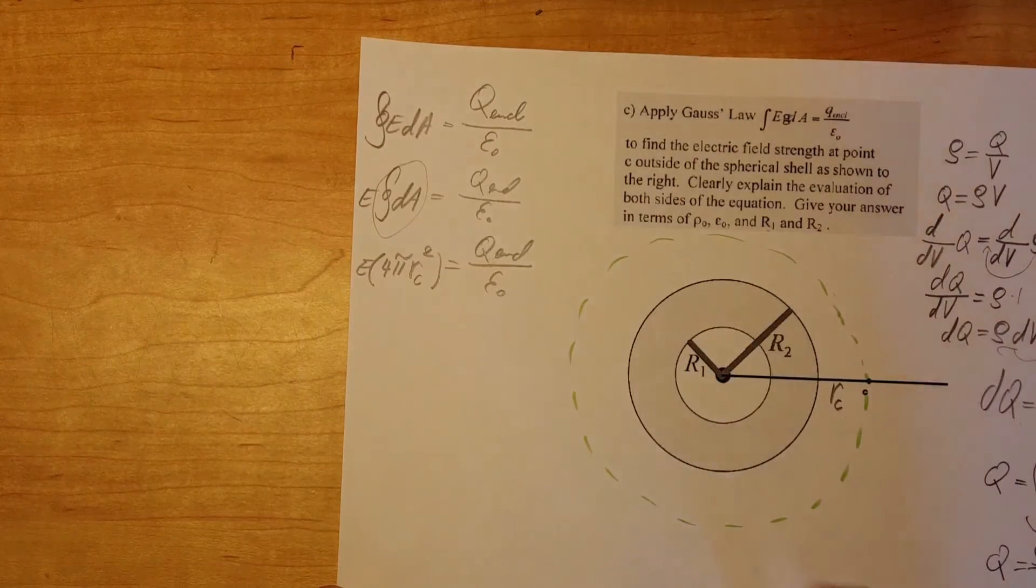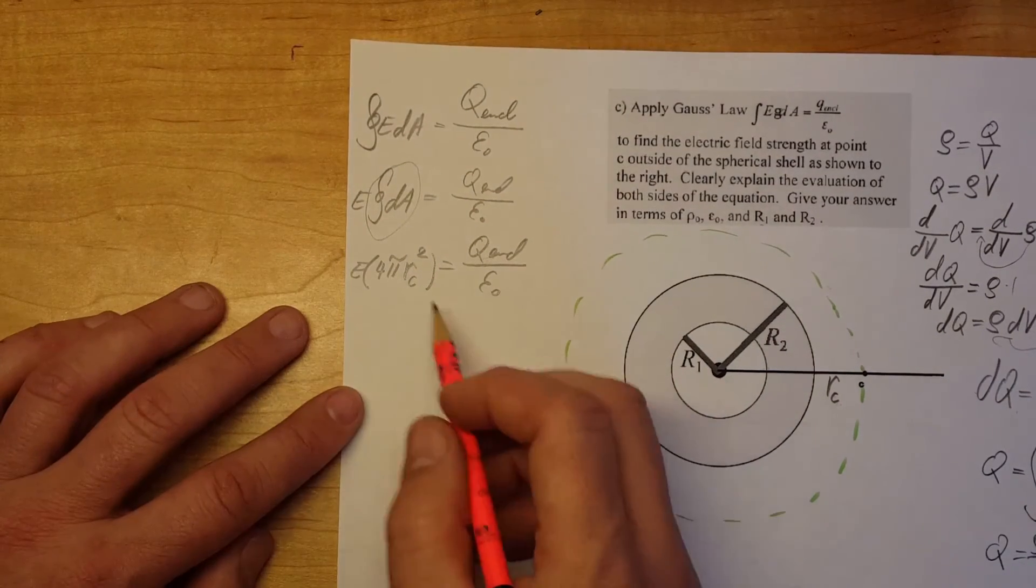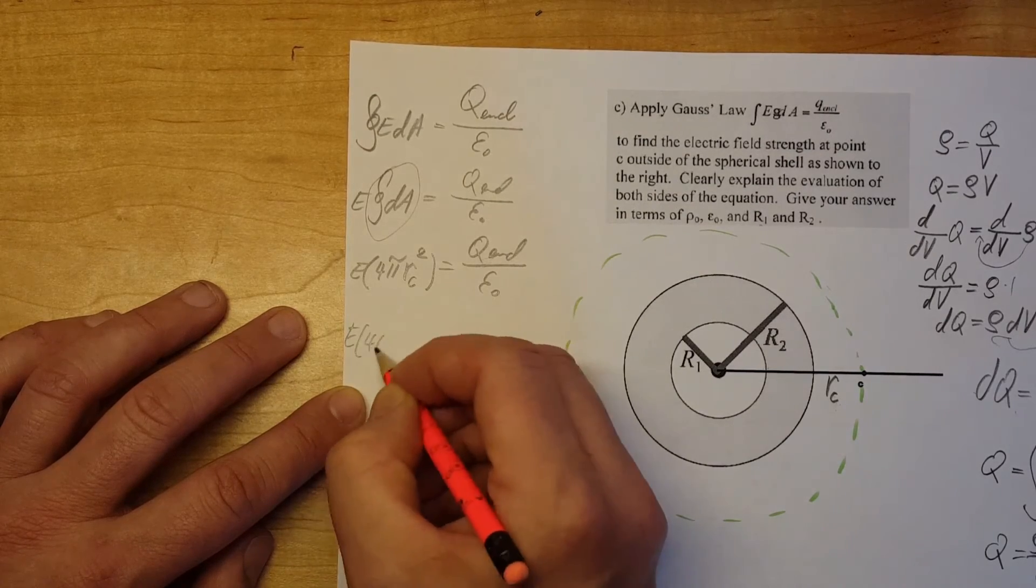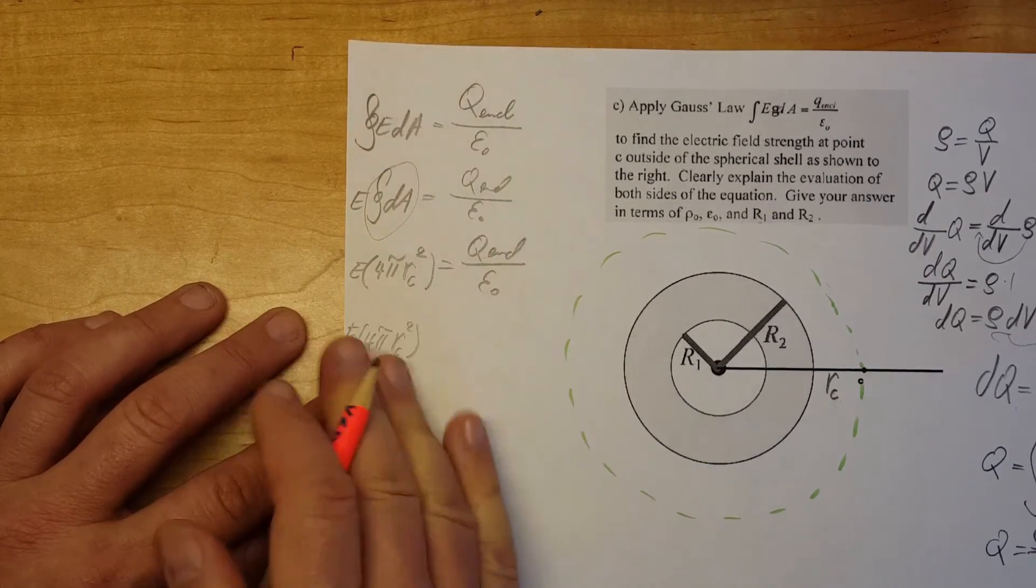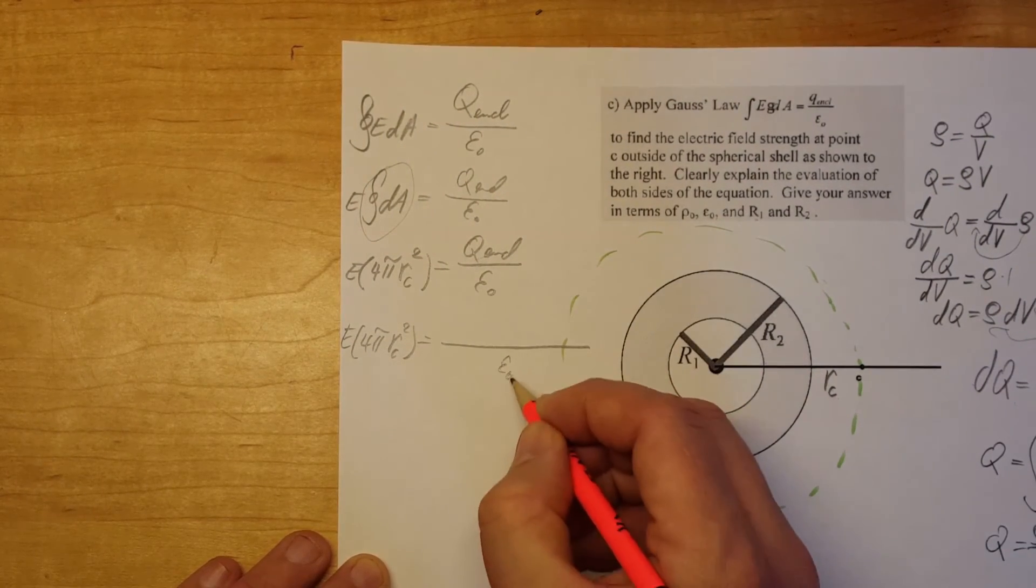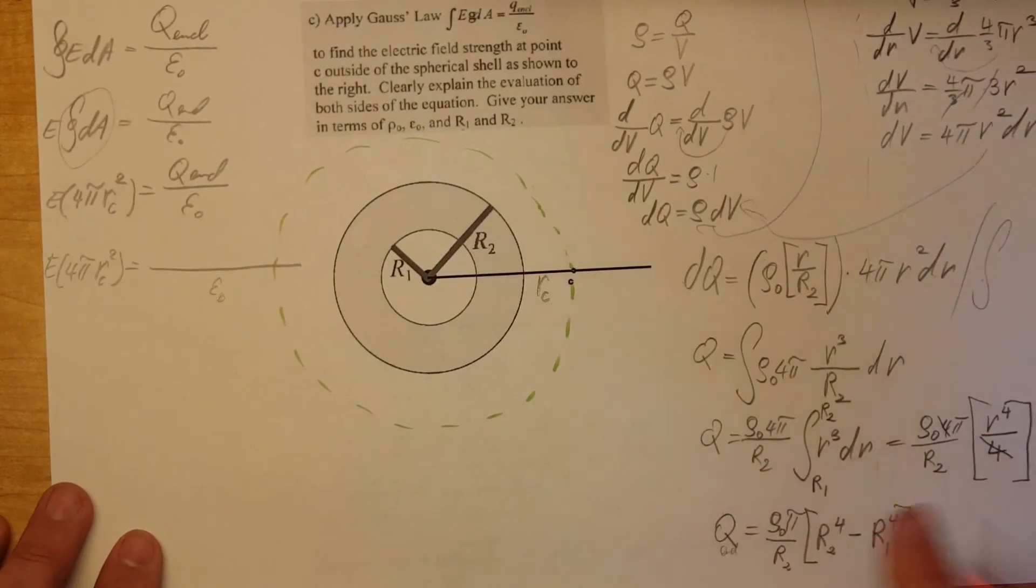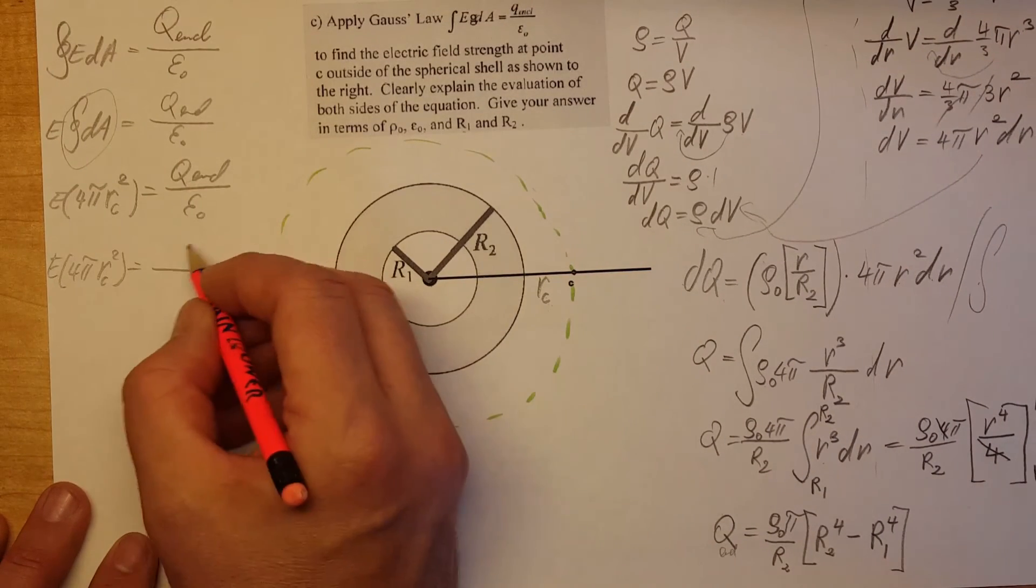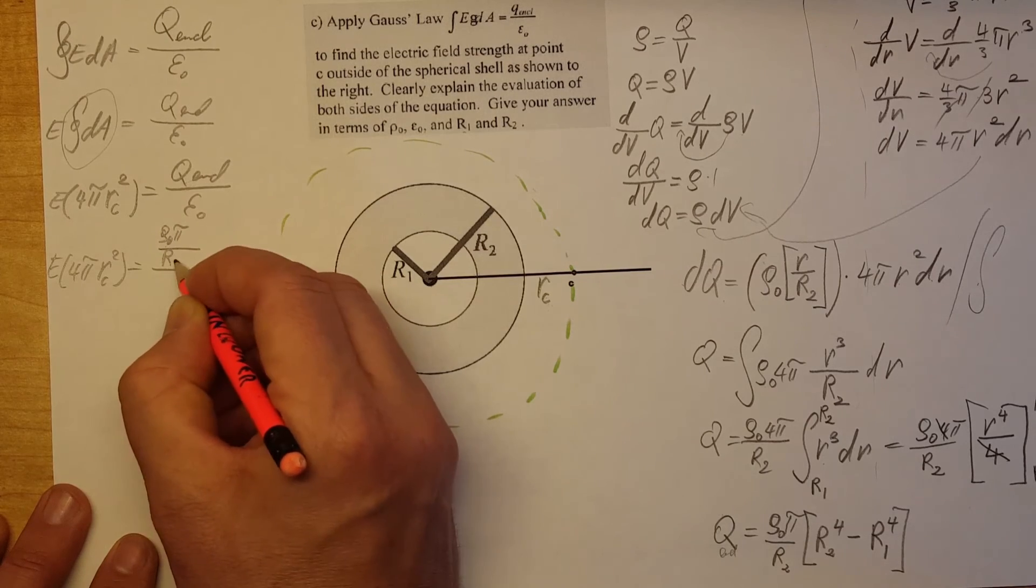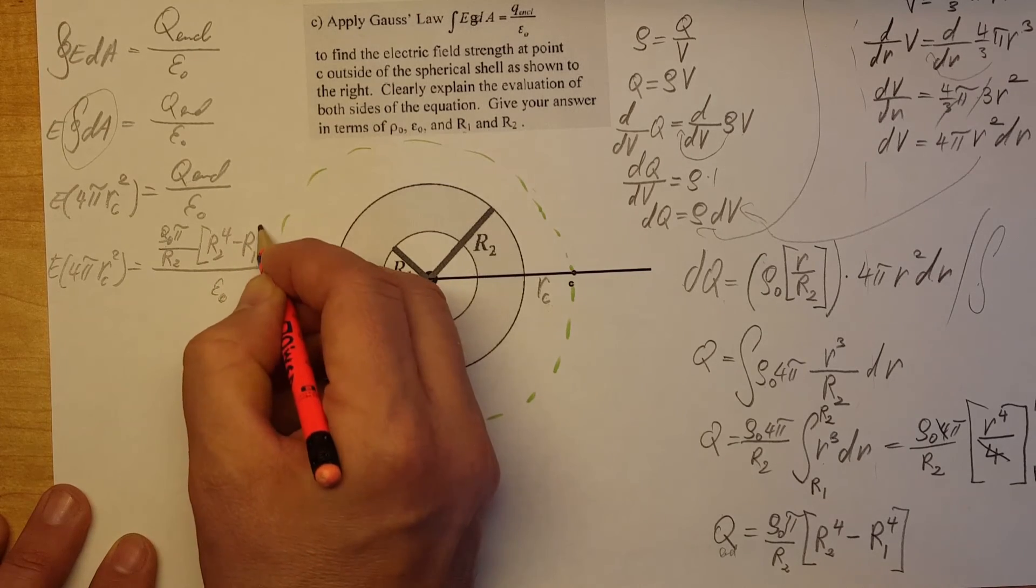That we're going to come and bring all the way here and plug it in for our Gauss's law formula. So E 4 pi Rc squared. We don't touch this side. Come here. And on the bottom we have the permittivity E0. And we're going to put on top of it this. So Rho 0 pi R2 R2 to the 4th minus R1 to the 4th. There you go.